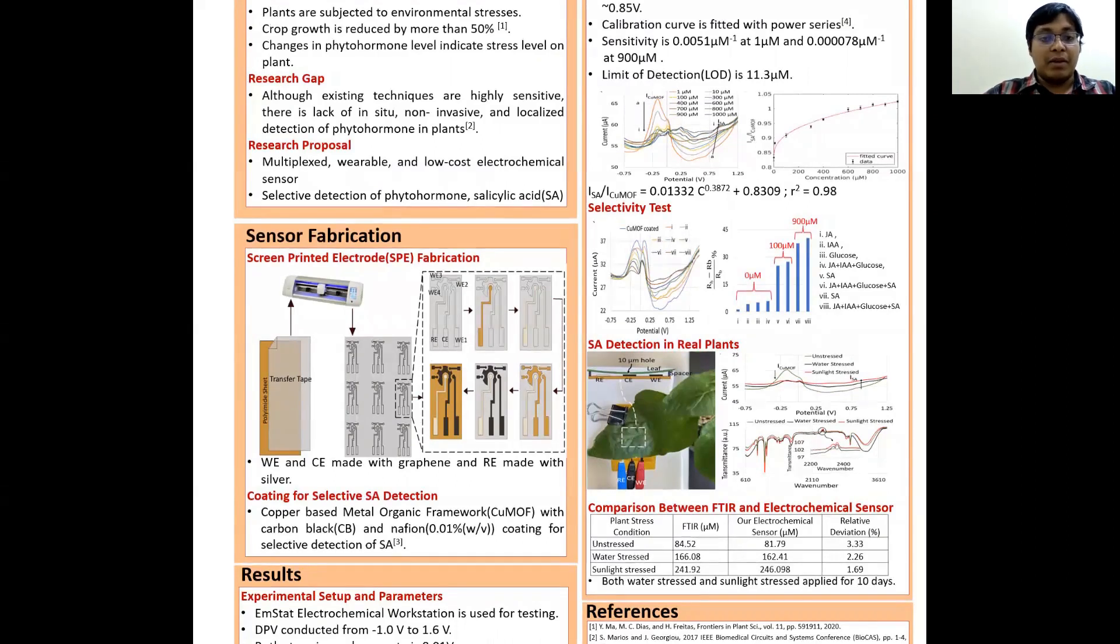The reference electrode was made with silver silver chloride ink and the working and counter electrode was made with graphene. To selectively detect salicylic acid, we used copper metal organic framework, COOMF-based coating with a working electrode. The ratio of this COOMF and carbon black of 2 to 1 was used with 0.01% weight per volume nafion to make the coating.